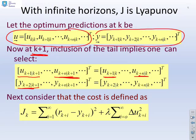y_{k+2} at k+1 is the same as y_{k+2} at k, and so on. So that's our assumption about if we assume that the predictions at subsequent samples basically ride on the tail.